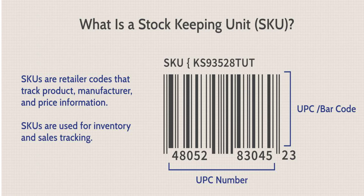Each commodity has its own SKU, which is formed by a sequence of letters and numbers that represent its specificities. This code works as a unique identifier for each product available in your inventory and is created according to the characteristics of each product, such as color, shape, and size.